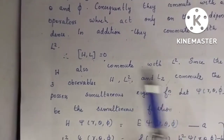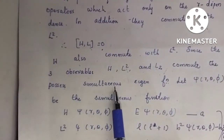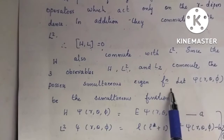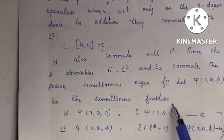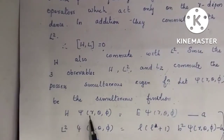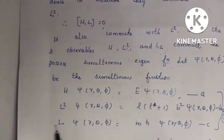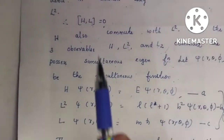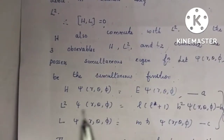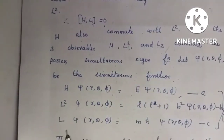H, L-squared, and Lz commute and possess simultaneous eigenfunctions. Let psi of r theta phi be the simultaneous eigenfunction. Then H psi of r theta phi equals E psi of r theta phi. If we have the simultaneous eigenfunction, we can solve the Hamiltonian equations.